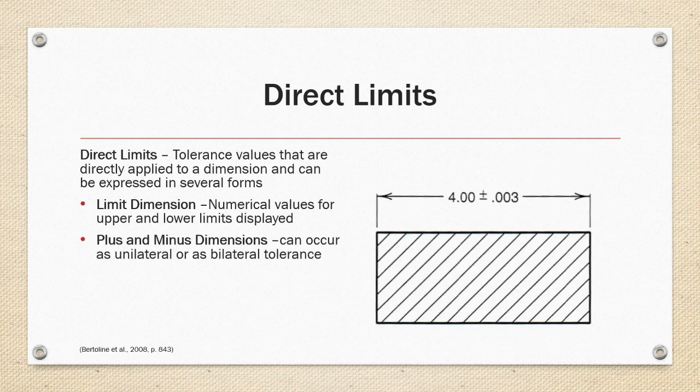The second form is the plus and minus dimensions, which can occur as bilateral tolerance like the one shown on the right or non-symmetric with a set of upper and lower tolerance values.